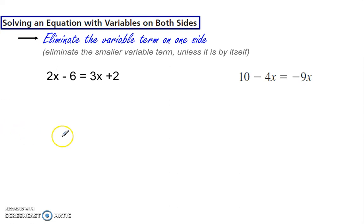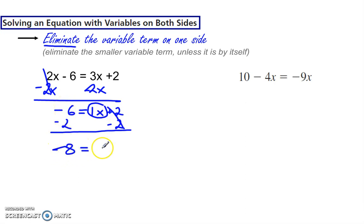If you're solving an equation with variables on both sides, eliminate the variable term on one side. So pick a side, eliminate the variable term. Here's my tip: eliminate the smaller variable term because it's going to leave you with a positive variable term. So I'm going to subtract 2x from each side. This cancels out. Negative 6 is equal to 1x plus 2. Now we want to get the variable by itself. So subtract 2 from each side. This cancels out and we get negative 8 equals x. Symmetric property of equality allows you to write it the other way around.